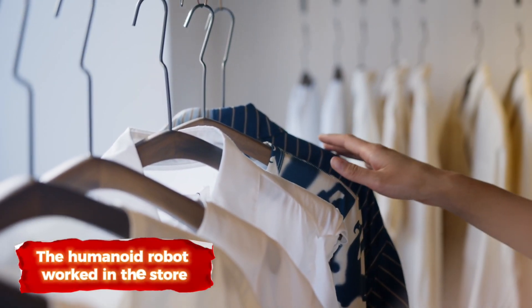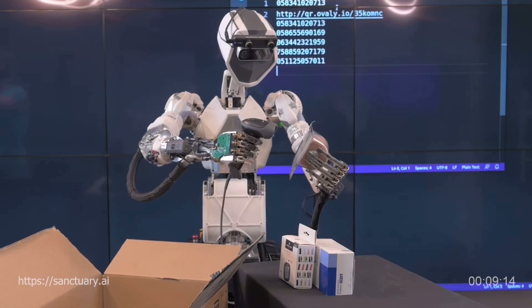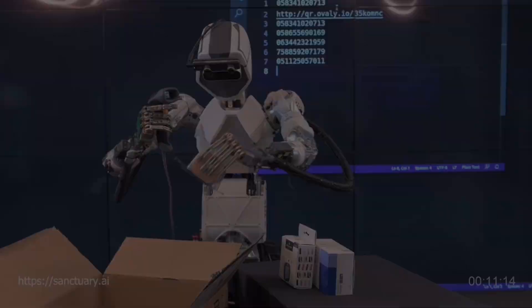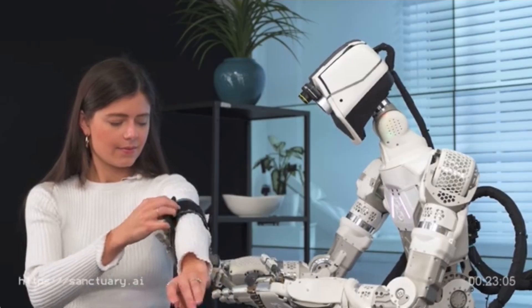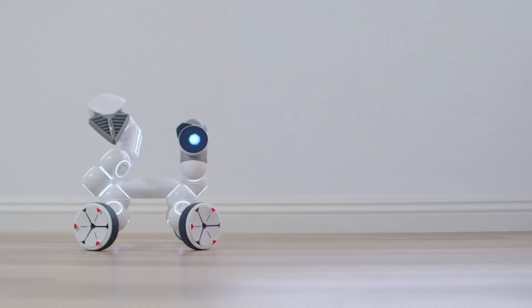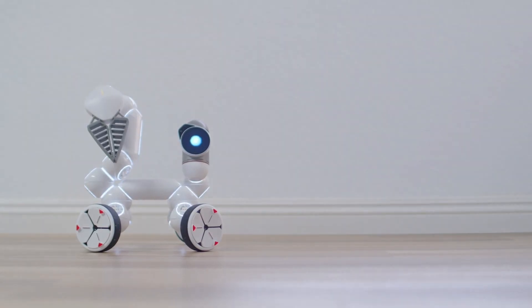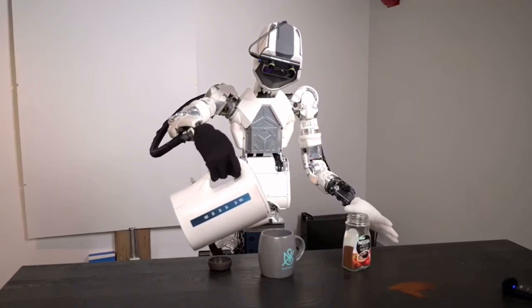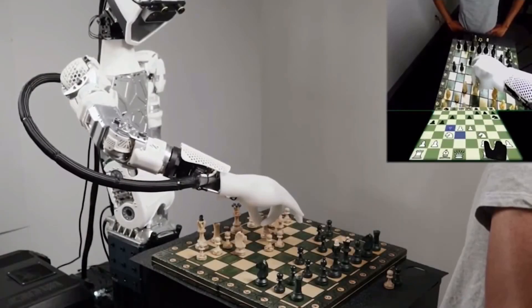The humanoid robot worked in the store. The Sanctuary Eye robot, which has long intrigued us with numerous videos on YouTube, turned out to have passed tests at the Marks Clothing Retail Store in Canada. The robot reportedly successfully performed various tasks of human workers.